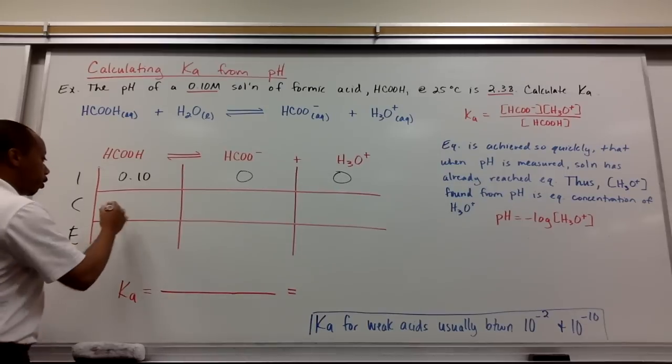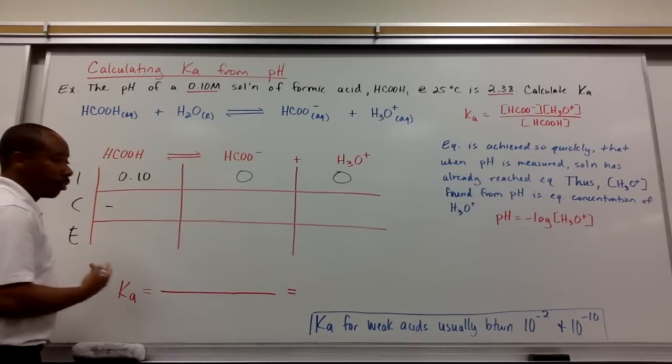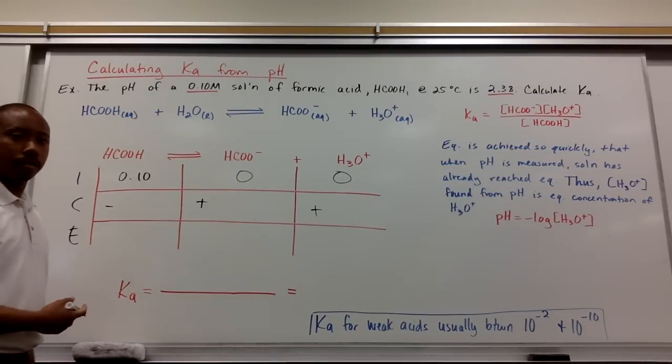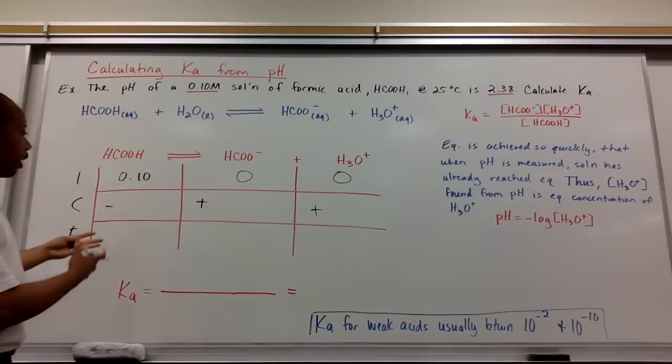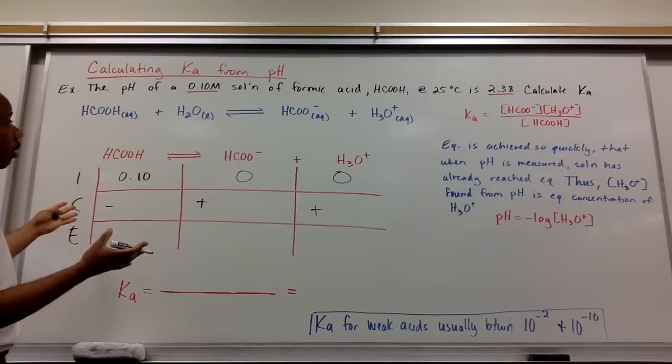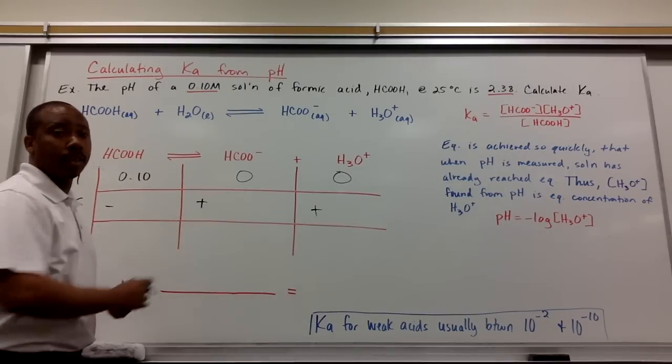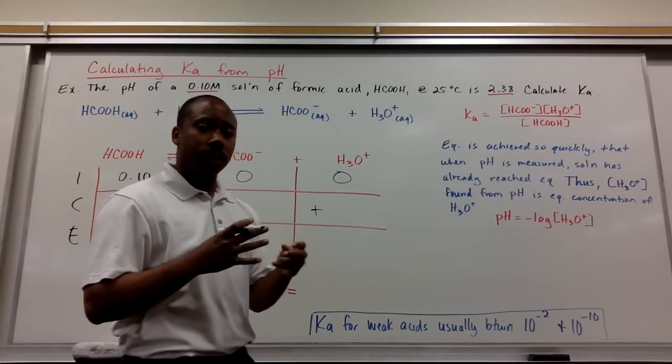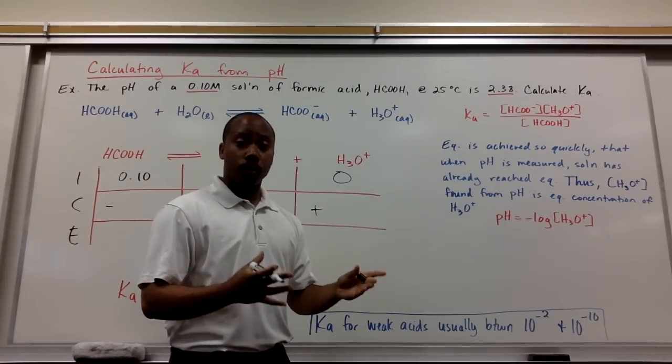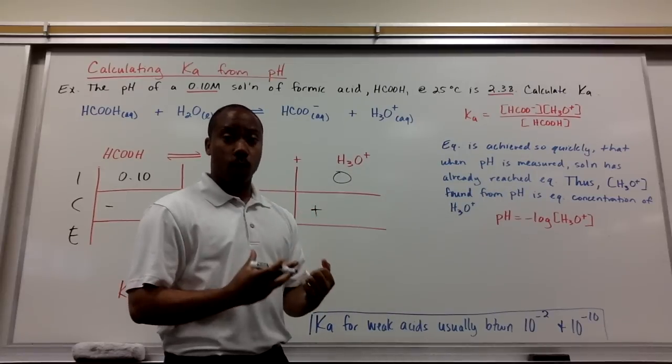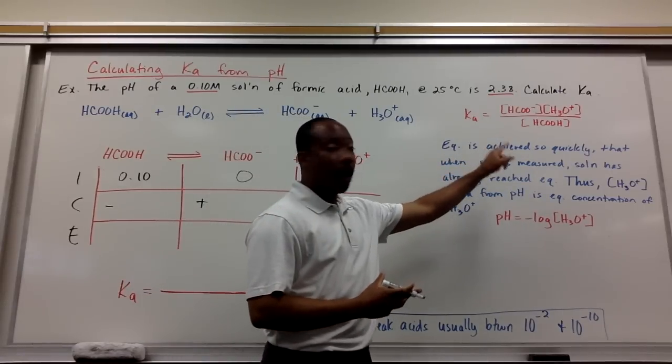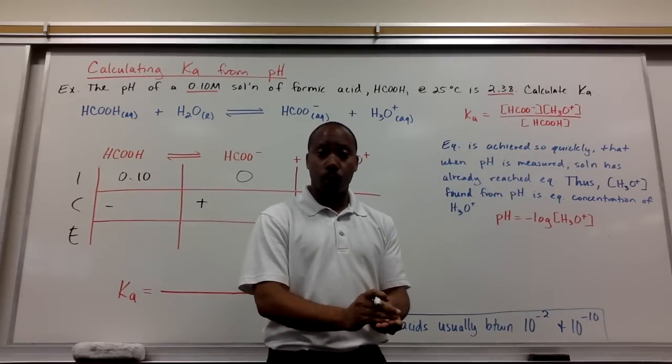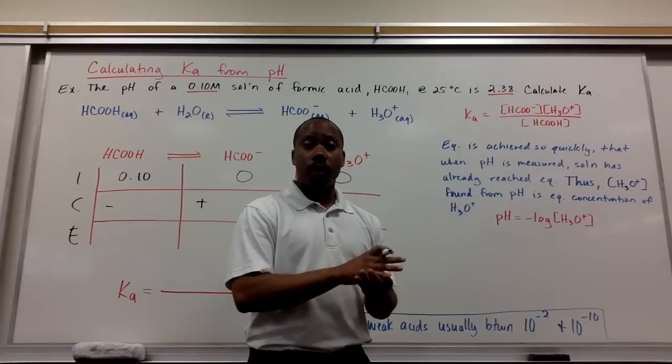So we know this is going to dissociate, meaning diminishes concentration, and these will increase in their concentrations. Now, we are not given any other information about the concentrations at equilibrium to figure out what the change is here. But we are given a pH. Something special to know about pH or even just acid and base reactions in general is that these reactions happen extremely quickly. So equilibrium is achieved very quickly, so quickly that when the pH is actually measured experimentally in laboratory, that reaction has already reached equilibrium.